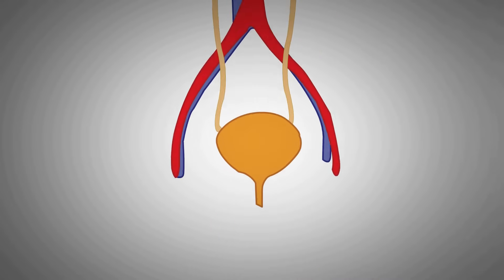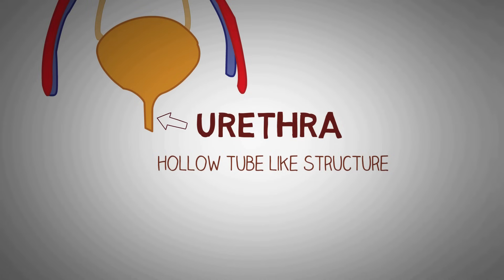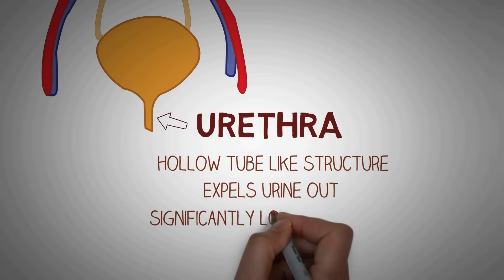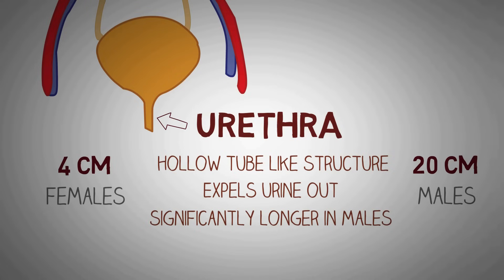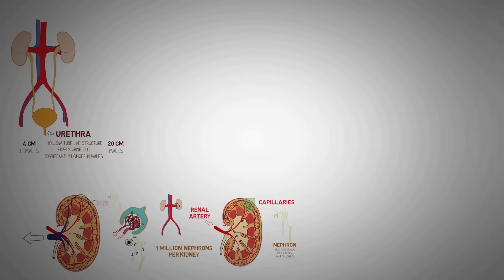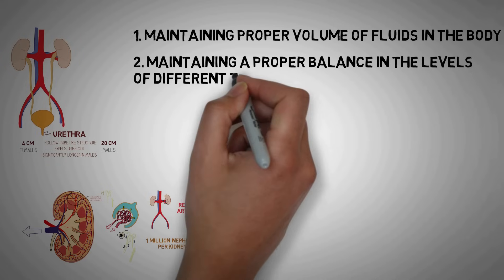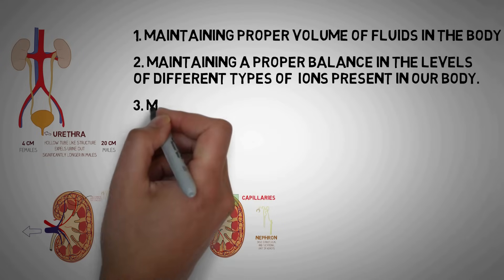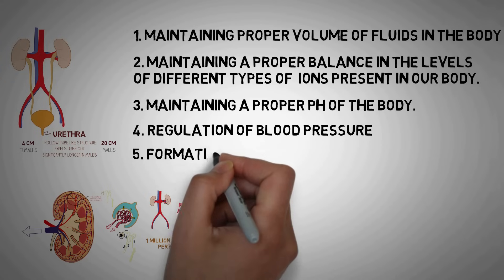The urine exits the bladder through the urethra, another hollow tube-like structure that helps expel urine out of the body. As the passage needs to traverse the length of the penis, it is significantly longer in males than females — approximately 4 cm in females and about 20 cm in males. This is why females have urinary tract infections more frequently than men. Besides excretion, the kidney has many other important roles: maintaining proper fluid volume, balancing ion levels, maintaining proper pH, regulating blood pressure, and forming important vitamins like vitamin D.